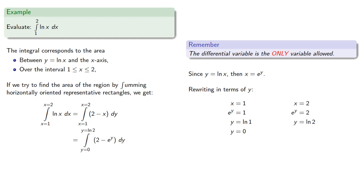And so we can rewrite our integral as the integral from y equals 0 to log 2 of 2 minus e to the y dy. And at this point, this is an integral we can evaluate.